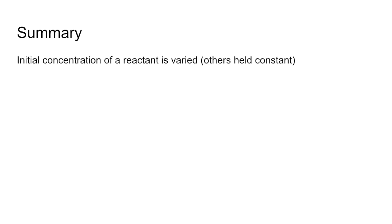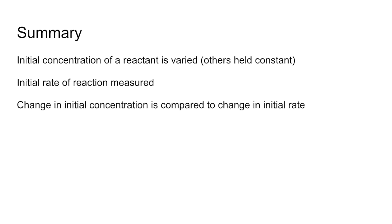You vary the initial concentration of a reactant, and if you have other reactants you need to hold their concentrations constant. You then measure the initial rate of the reaction — the rate at the start — and look at how the change in initial concentration compares to the change in the initial rate.